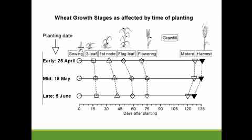When you plant late, the time to flowering is somewhat extended, but your time to maturity is shortened — so your grain fill period is shortened. Your yield potential of a late-planted crop is therefore less than that of an early-planted crop. The ideal is a 15 May planting, because you get the best of both: a relatively long period to flowering and a relatively long grain fill period.